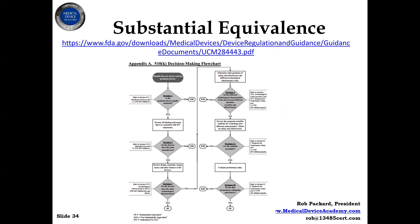Then the next part — and this is what a lot of companies focus on — is really the third step, and it's not as important as the other two. That is: what are the differences in technological characteristics between your device and another? You might identify a device that has the exact same technological characteristics as yours, but if it has a different intended use, you can't use it as a predicate. A lot of people focus on number three when really decision number two is much more important.